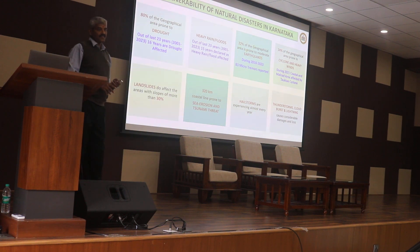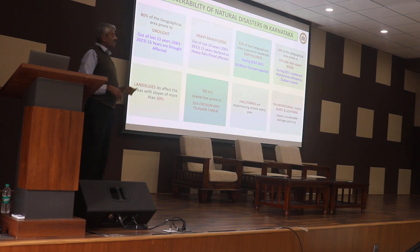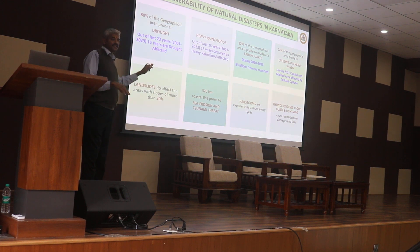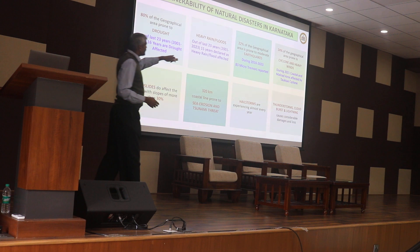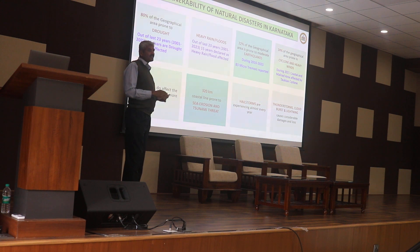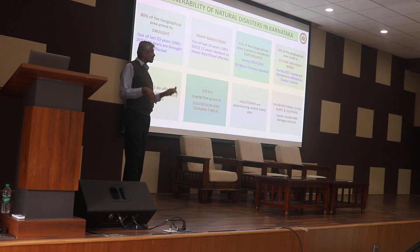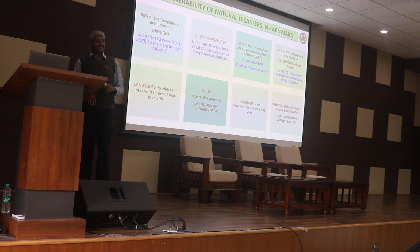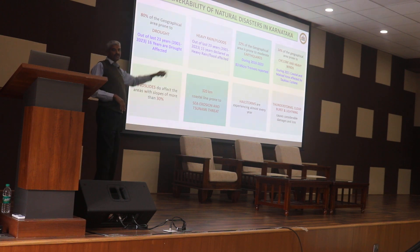The coastal districts are exposed to cyclones from the Bay of Bengal, Arabian Sea, and the Indian Ocean. If cyclones occur, they also serve as a resource providing rainfall in the form of drizzling. When high cyclones take place in the Arabian Sea or Bay of Bengal, three coastal districts — Uttara Kannada and Dakshina Kannada — are more prone. If any tsunami activities take place in the oceans, these three districts are also most at risk.